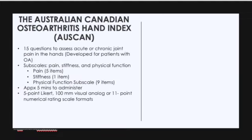For the OSCAN, or the Australian Canadian Osteoarthritis Hand Index, I couldn't find an actual copy of the assessment online; however, I did find the area it assesses. It consists of 15 questions to assess acute or chronic pain in the hands, and was developed for patients with osteoarthritis. It has three subscales — pain, stiffness, and physical function — and takes approximately five minutes to administer.